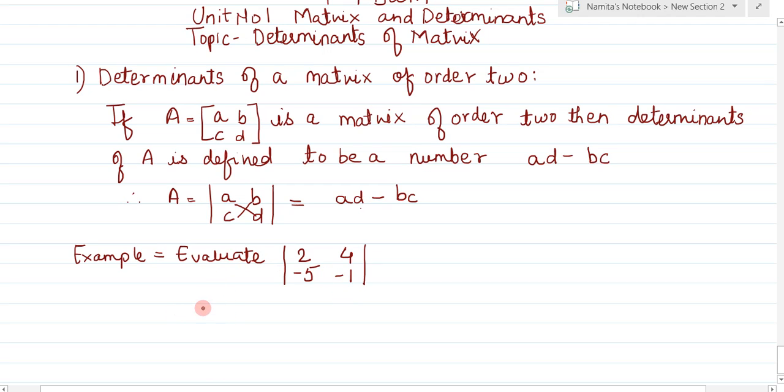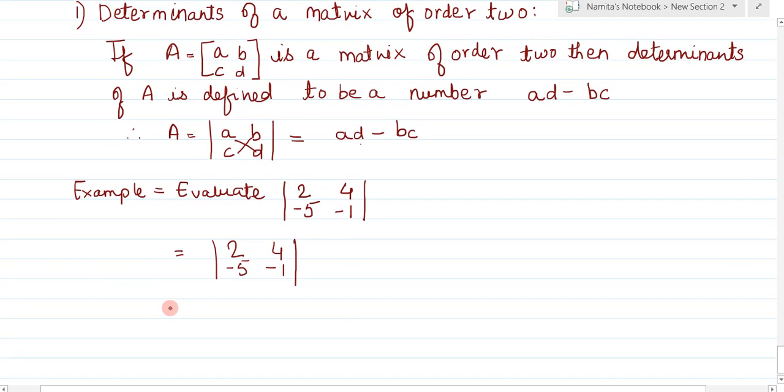Solution: the matrix is 2, 4, -5, -1. To find the determinant, we use the formula a times d minus b times c.